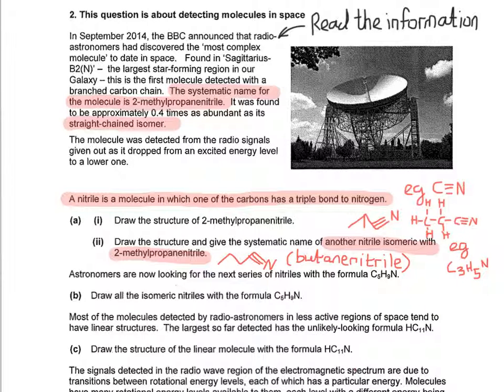Now we've got to draw all the isomeric nitriles with the formula C5H9N. You're noticing they've warmed us up a little bit with some quite easy stuff, and now they're starting to challenge us. I'm going to start off by drawing the straight chain. It's always a good idea to start with the straight chain, and then you can start branching and checking all the time, does it still match C5H9N.